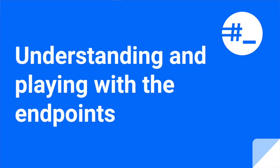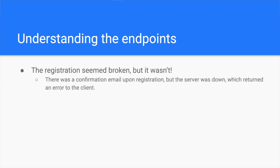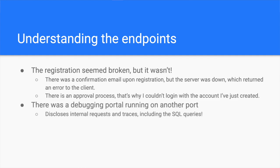Before I found how to achieve account takeover, I first tested the endpoints I collected earlier. During application mapping, there was a registration form which returned an error. I thought maybe it's broken and moved on. However, it turns out that the application sends a confirmation email to the user, but the mail server was down. Besides, the signup requires an approval from an employee. I found a debugging portal on another port on the same server, which disclosed all the operations, including the backend responses. One of them contained a mail server connection error, and another one returned the ID of the newly created user — meaning it was successfully created, but not active yet.